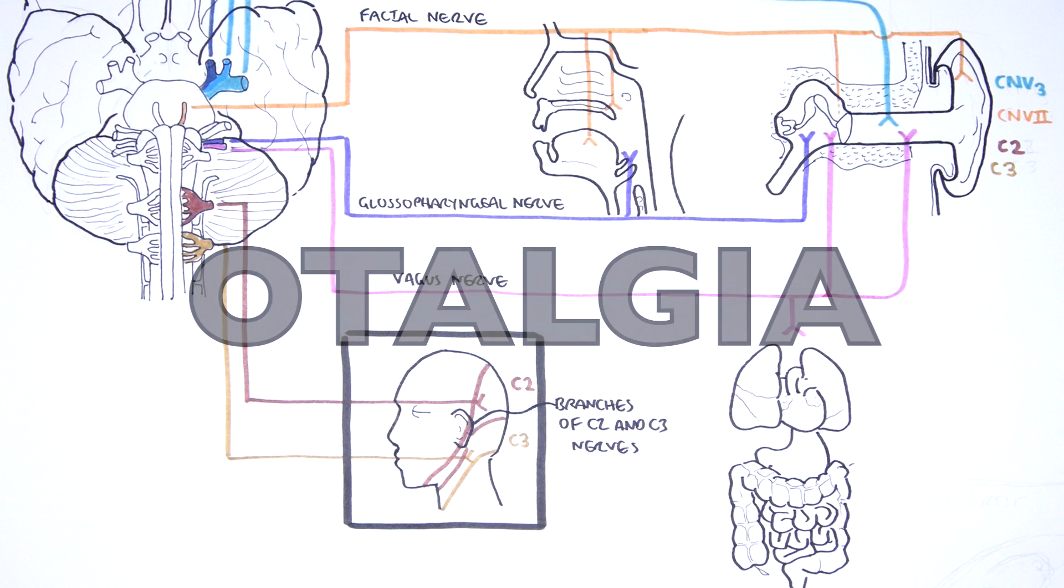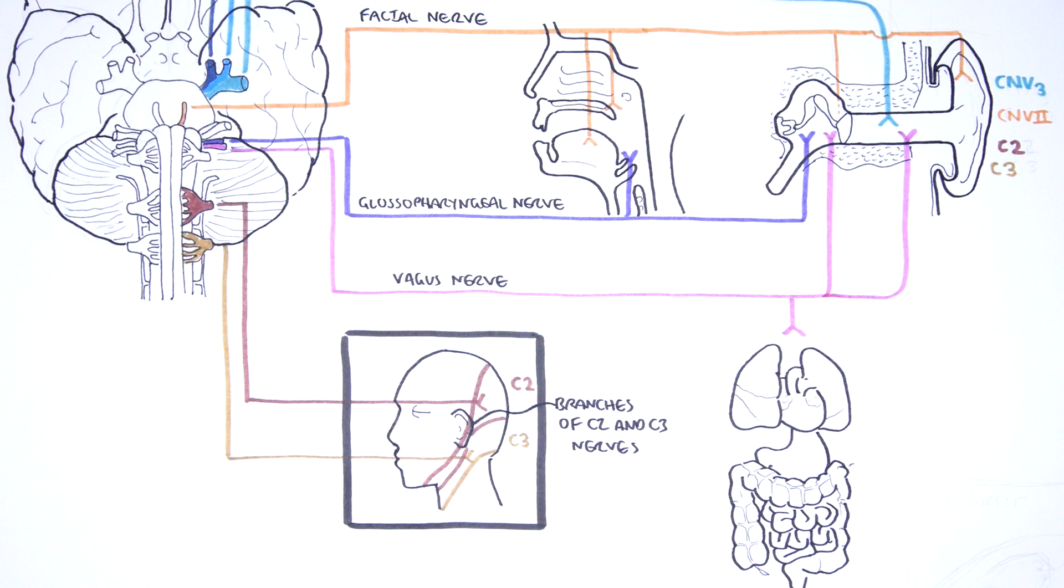Irritation of any portion of these nerves can result in otalgia. A good way to categorize otalgia, which is ear pain, is into primary otalgia and secondary otalgia.